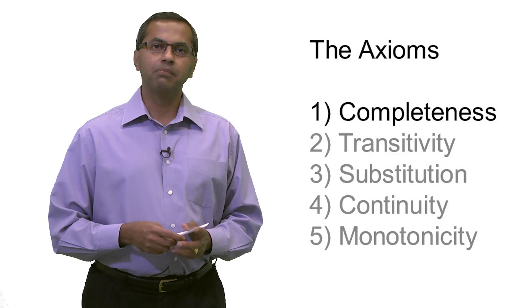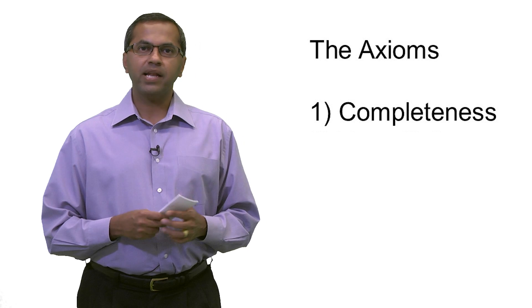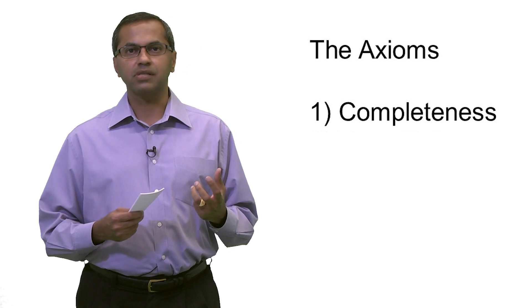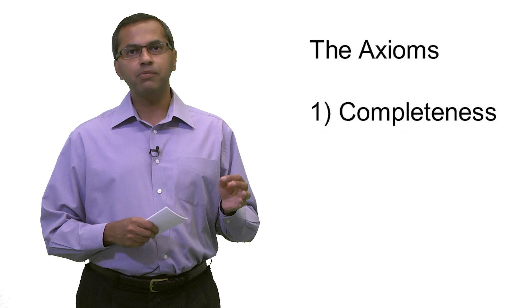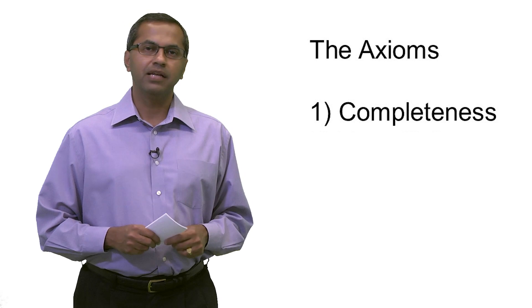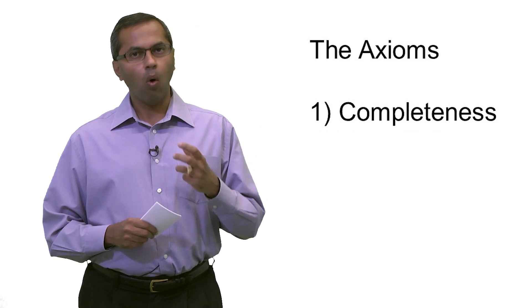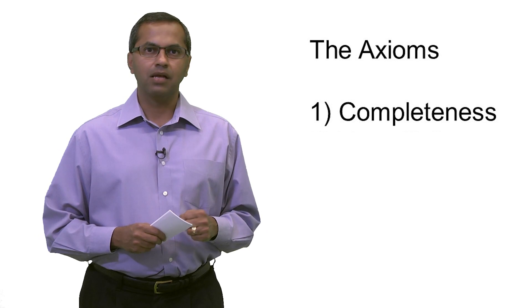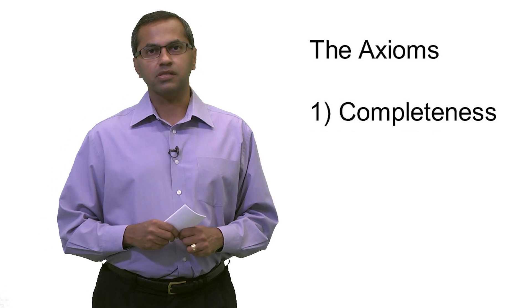Let me start off with completeness. It's a very simple axiom. Completeness says that when I give a decision maker two options, let's say x and y, the decision maker should be able to articulate a preference between those two options. In other words, they should either be able to prefer x over y or y over x, or they should be able to say that they're totally indifferent between those two options.